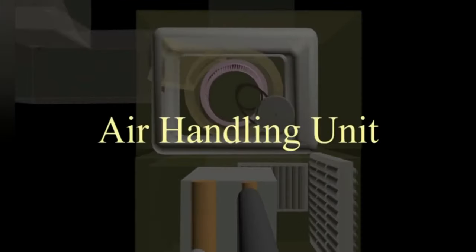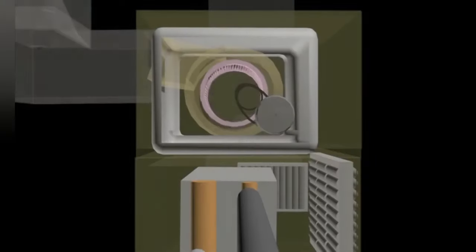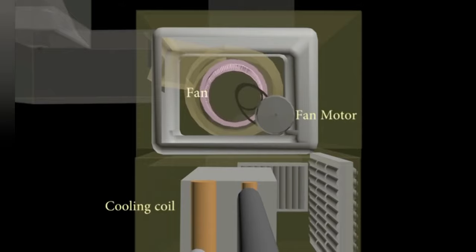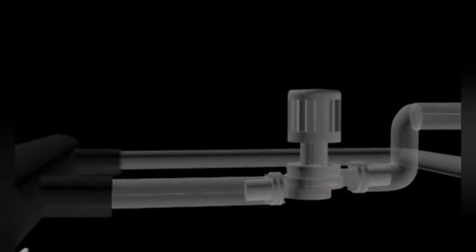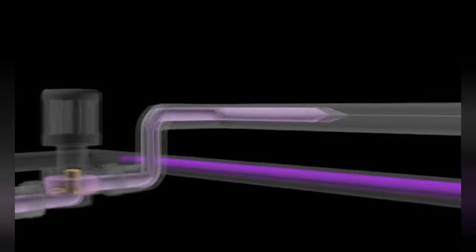The air handling unit is where cold air is produced before it is distributed. It consists of several key components such as cooling coil, fan, fan motor, belting, filters, and the casing. Chilled water produced in the evaporator flows into the air handling unit through a pipeline marked in dark blue, known as chilled water supply.